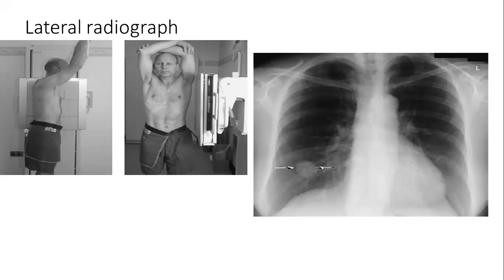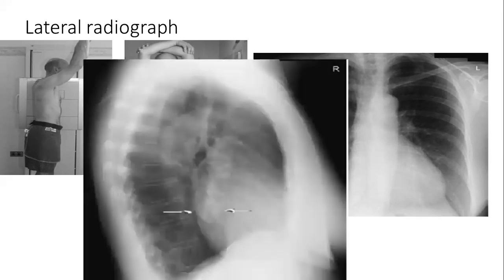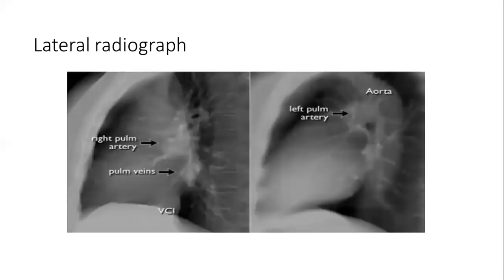How do we localize the D6 spinous process when centering for a chest radiograph? The inferior angles of the scapula are at the level of the D7 vertebral body transverse process, so you palpate the inferior angles and the spinous process just above is D6. The lesion we saw in the right lung on the lateral radiograph is located in the anterior segment of the right lower lobe. It is very important on the lateral radiograph to understand the structures, especially related to the hilum.